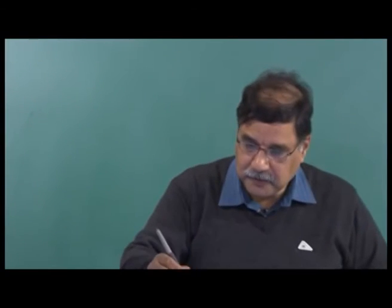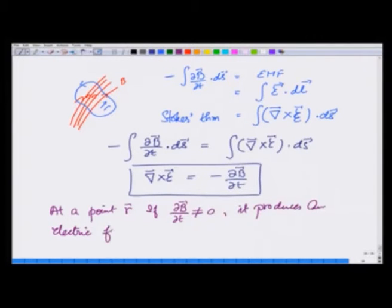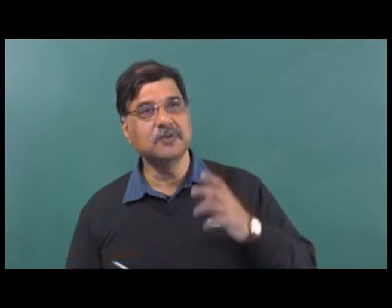What does it mean? It means that at a point r, if dB by dt is not equal to 0—that means the magnetic field is changing—it produces an electric field such that curl of that electric field is equal to minus dB by dt. So now we have another source of producing electric field.